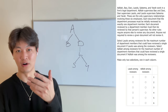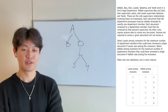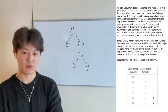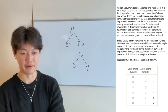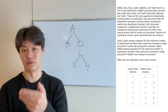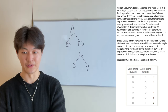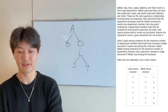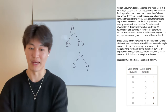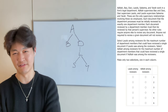This is where it becomes a little bit more like the LSAT logical games questions — we have a rule, we just need to apply it. The question says: select Laszlo among reviewers for the maximum number of department members that could have reviewed a single document if Laszlo was among the reviewers. Then: select Adila among the reviewers for the maximum number of department members that could have reviewed a single document if Adila was among the reviewers. Make only two selections, one in each column — it's two-part analysis.